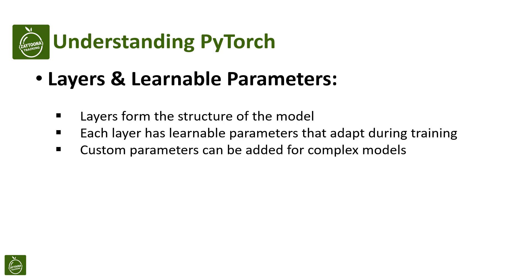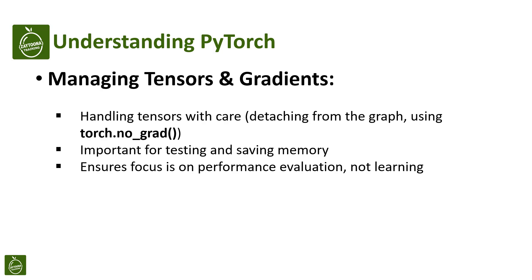In PyTorch, we build models with layers, and each layer has its own learnable parameters. These are the parts of the model that change and learn as the model sees more data. Besides these standard ones, we can also add our own custom parameters, especially for complex models. This flexibility is key to building powerful models.